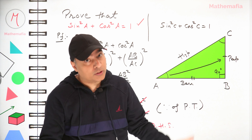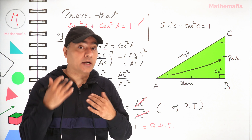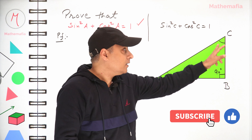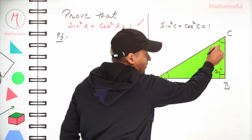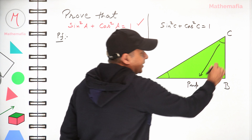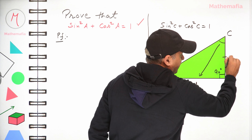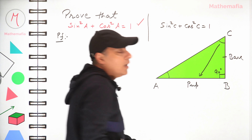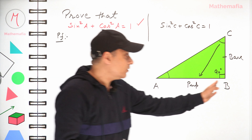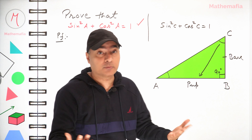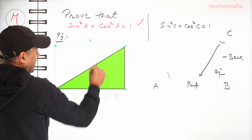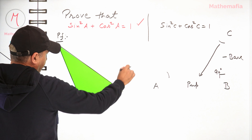Let me explain how we do that for angle C, and then you can try it yourself. If we talk about angle C, the side in front of angle C will become the perpendicular. Now I know most students get confused — this side was a perpendicular before, so why are we taking it as the base now? Let's understand it like this: if I rotate the triangle, things become clearer.